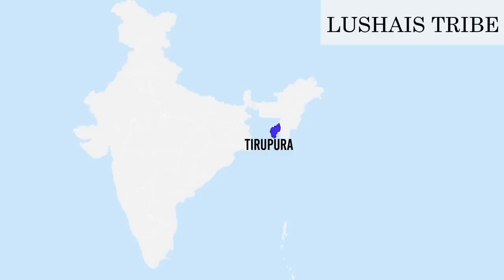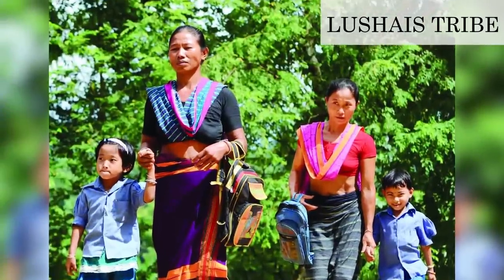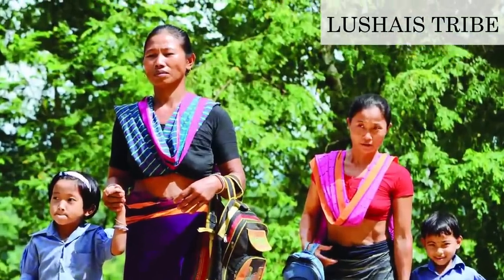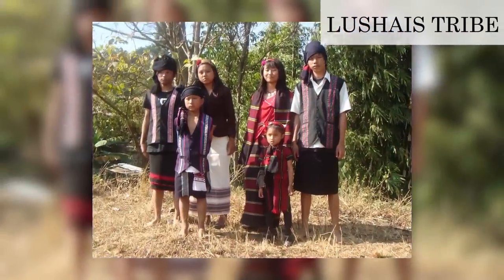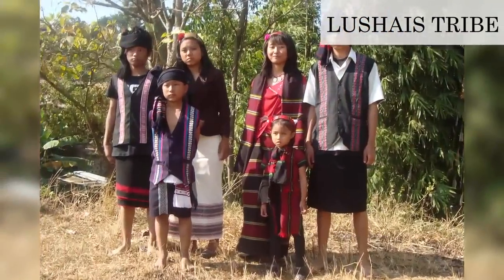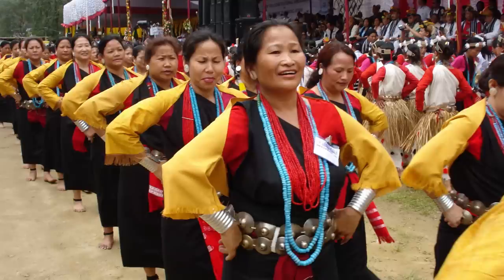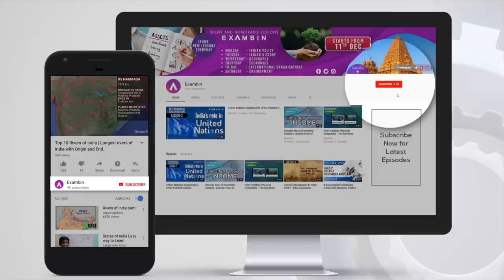Luschais Tribe: they belong to the Kuki-Chin group of tribes in Tripura. They live on jhum cultivation and hunting of wild animals. They are also famous as an orange-producing community. With this, we have come to the end of this session. Thank you for watching till the end. In the next lesson, we would be seeing about the remaining tribes and the problems faced by them.